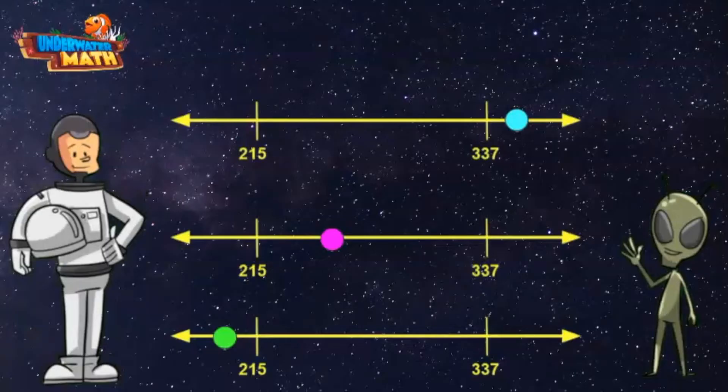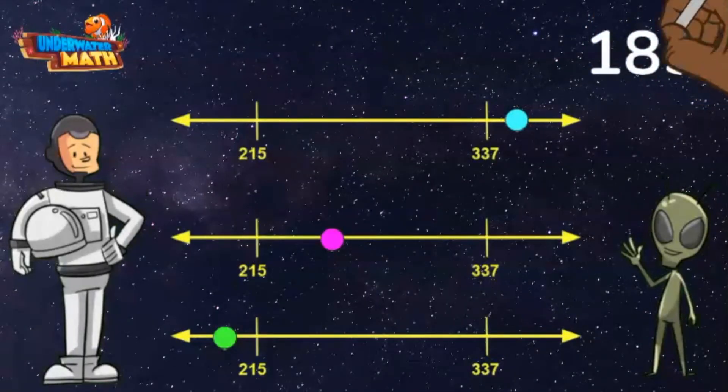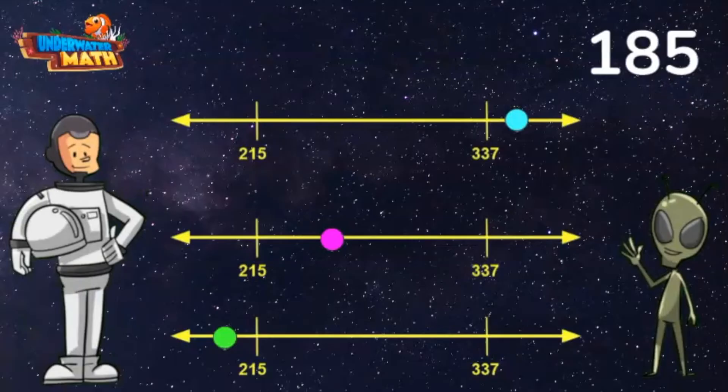Wait a minute, Lenny, that's three number lines! What's going on here? Oh, we need to find the number line where the point represents 185. I can see there are two labeled tick marks: 215 and 337. I know that 185 comes before 215.